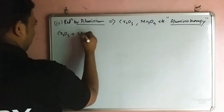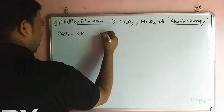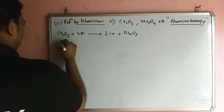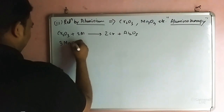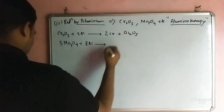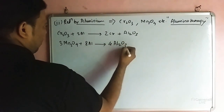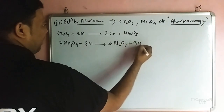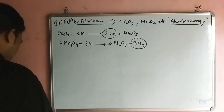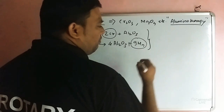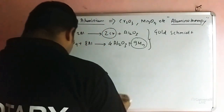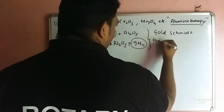The reactions are: Cr2O3 + 2Al gives 2Cr + Al2O3. And Mn3O4 + 8Al gives 4Al2O3 + 9Mn. Here we get the extraction of chromium and manganese. Together this is called the Goldschmidt thermite process.